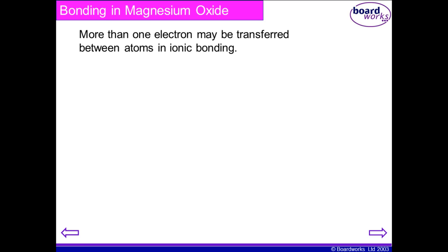Hi and welcome to my fourth video in the series about structure and bonding. Today we are going to go further into detail into ionic bonding. Last time I used the example of ionic bonding with sodium chloride. Today we are going to be looking at different combinations, first of all starting with magnesium oxide.